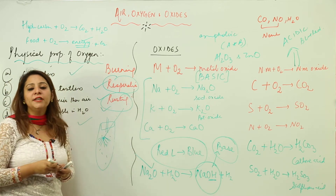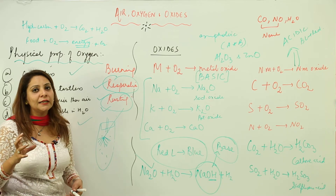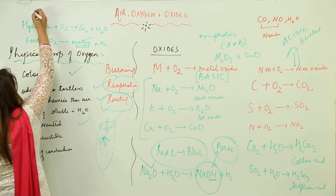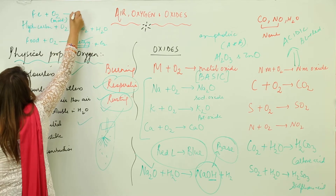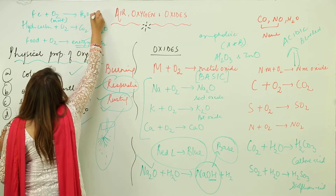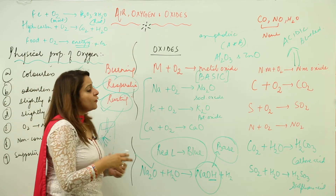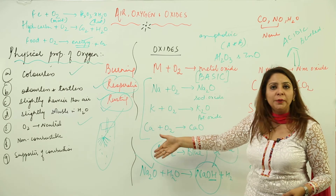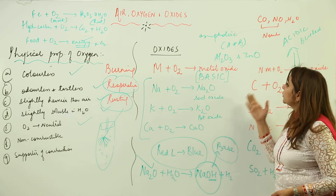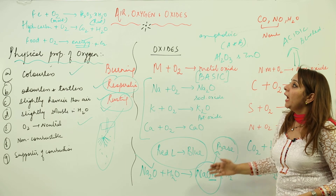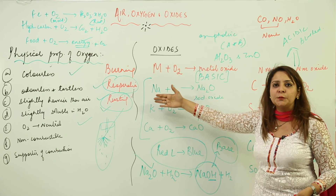Rusting is also due to oxidation. When an iron article is used for a few years, it develops a brown layer called rust. This happens because iron (Fe) comes in contact with air and moisture, developing a brown layer which is Fe2O3·xH2O, called rust. So this covers the physical properties of oxygen, the nature of oxides — basic, acidic, amphoteric, and neutral — and the phenomena of burning, respiration, and rusting.